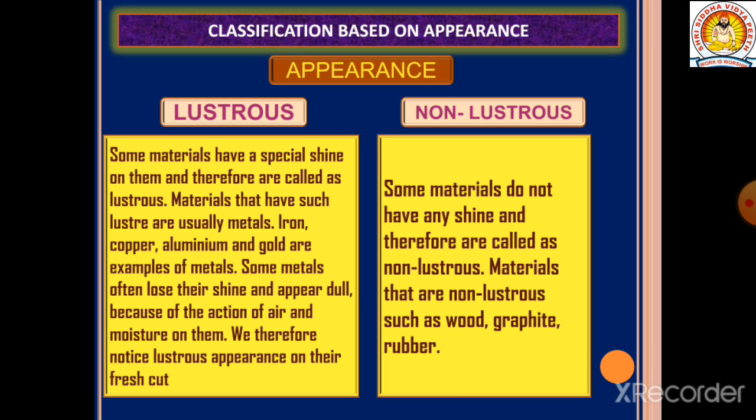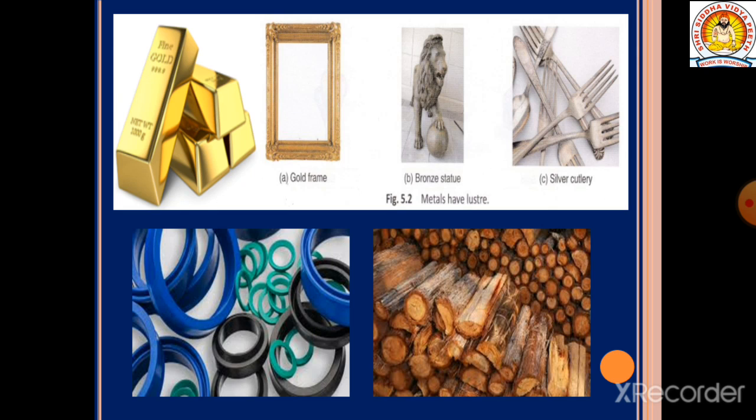Some materials do not have shine and therefore are called non-lustrous. Examples of non-lustrous materials are wood, graphite, and rubber. Here you can see pictures of gold, bronze, and silver cutlery — all metals which are lustrous. Rubber and wood are examples of non-lustrous materials.